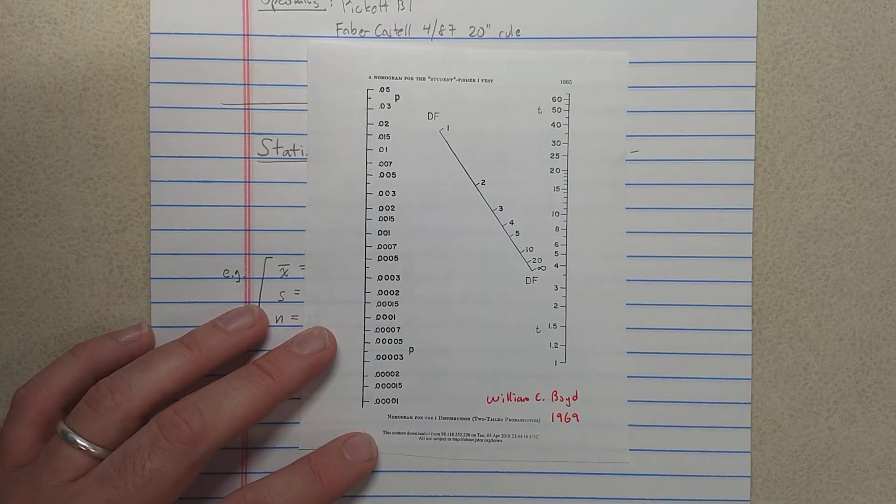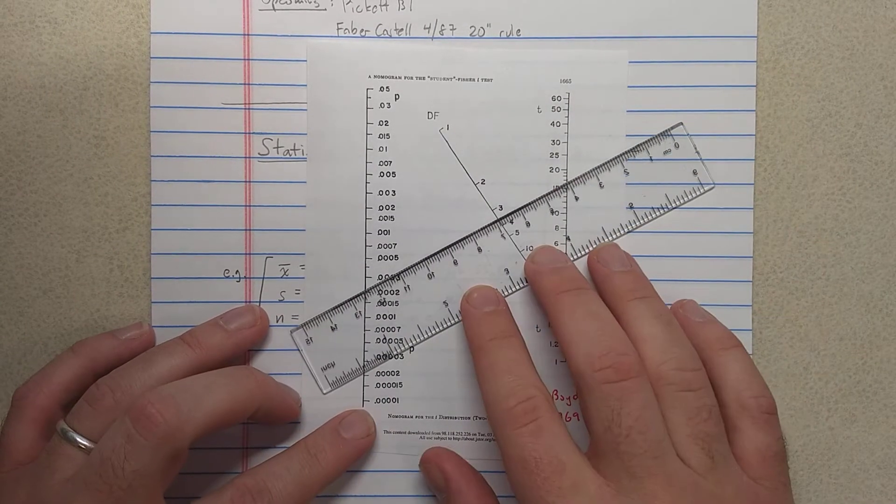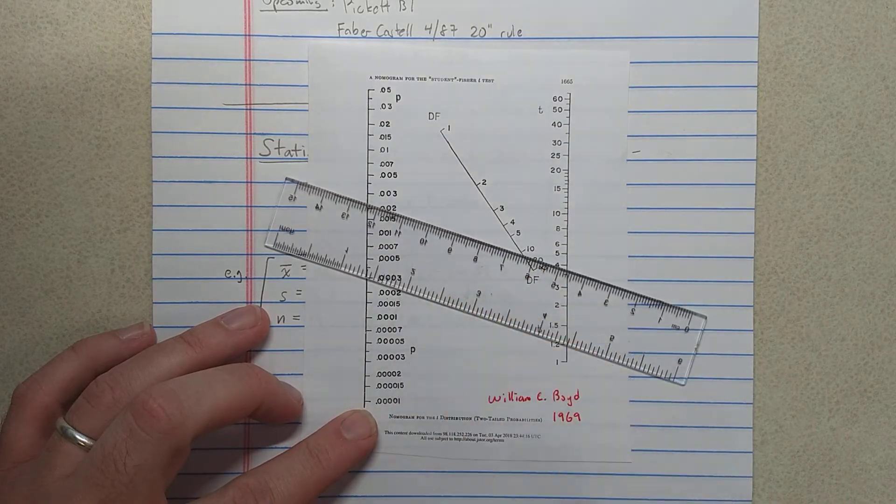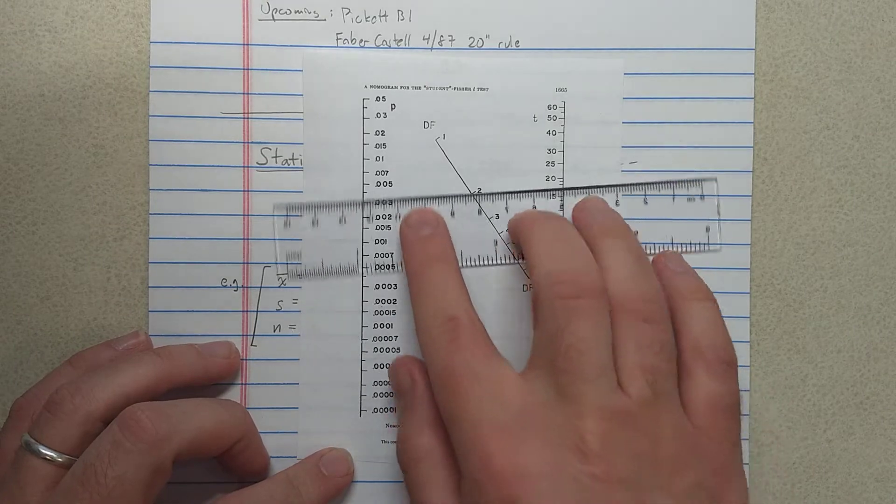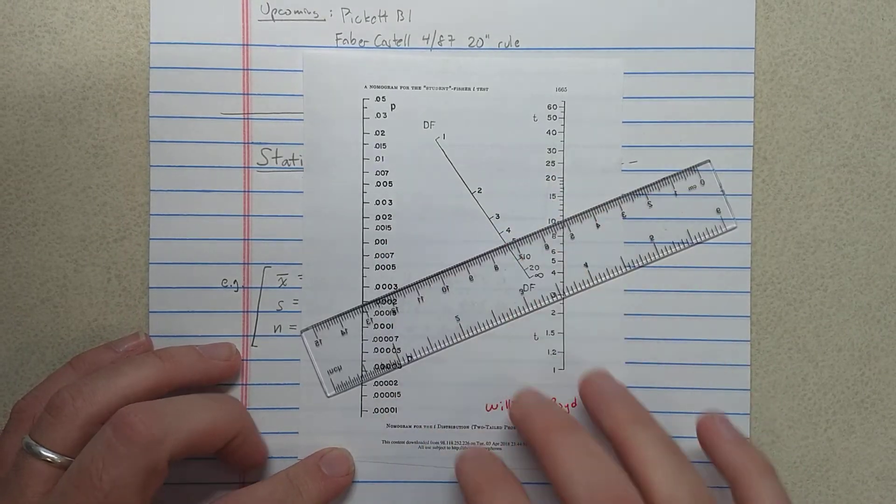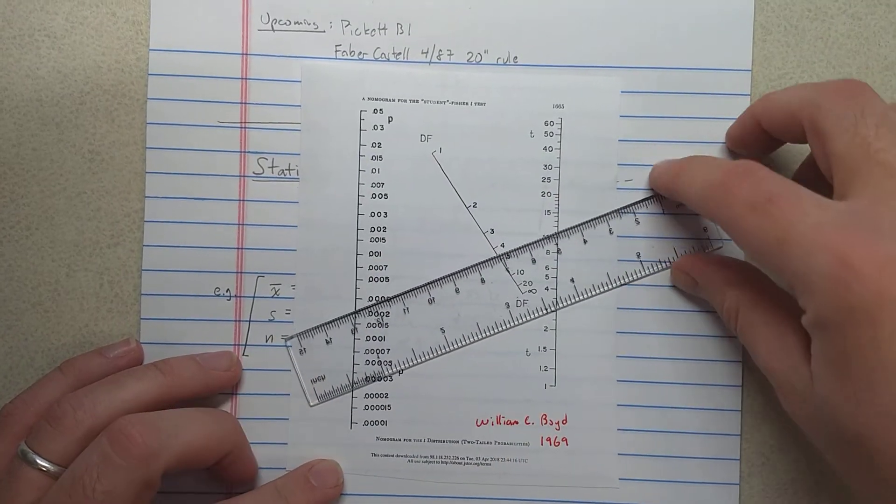And so what it does is you have your p-values here, your degree of freedom's here, and it's a nomogram. You should use this with a ruler. Now, nomograms are also among future videos I'm planning on, so I'm working on something nomogram-related also.